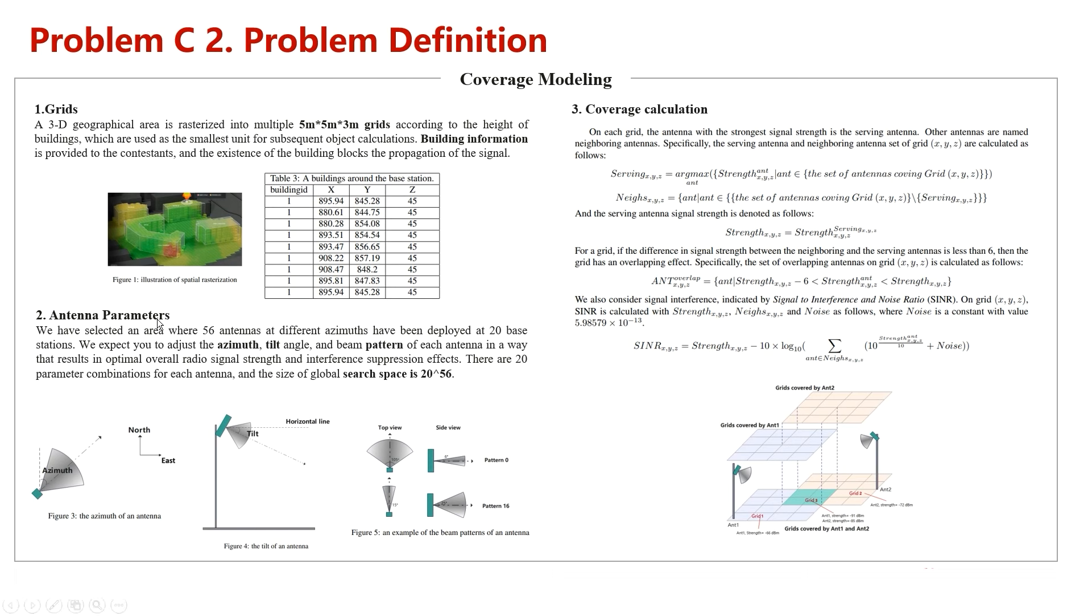Then, antenna parameters. We know that the antenna is a unit used to send signals to users and receive signals from users. There are totally 56 antennas with different parameters in our task. You will mainly change the tilt, azimuth, and beam pattern of each antenna. These parameters will affect the grids an antenna covers and the strength of the signal a grid receives.